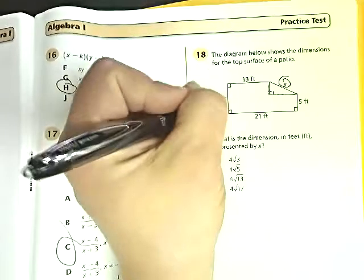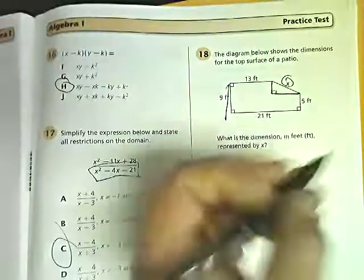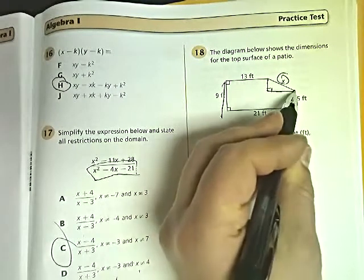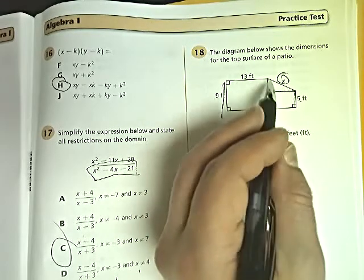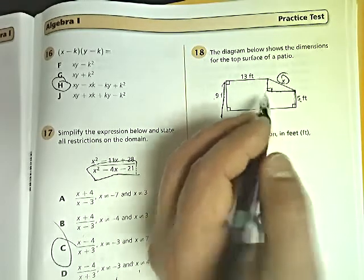Now, if this whole side is 9, and all the way up to here is 5, whatever is left over from 9 when you take 5 away is what this side is worth. 9 minus 5 is 4.